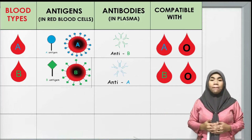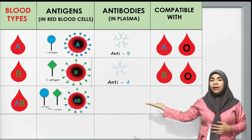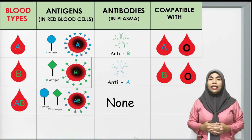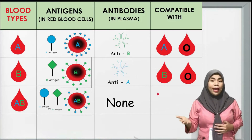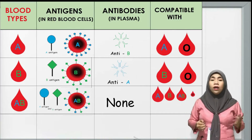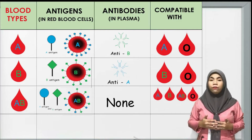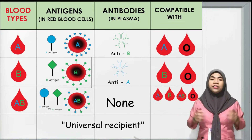For blood type AB, they will have both A antigens and B antigens, and no antibodies in the plasma. Therefore, they are compatible with type A, type B, type AB, and type O, since they do not have any antibodies that could attack the antigens of these blood types. Blood type AB is considered to be the universal recipient.